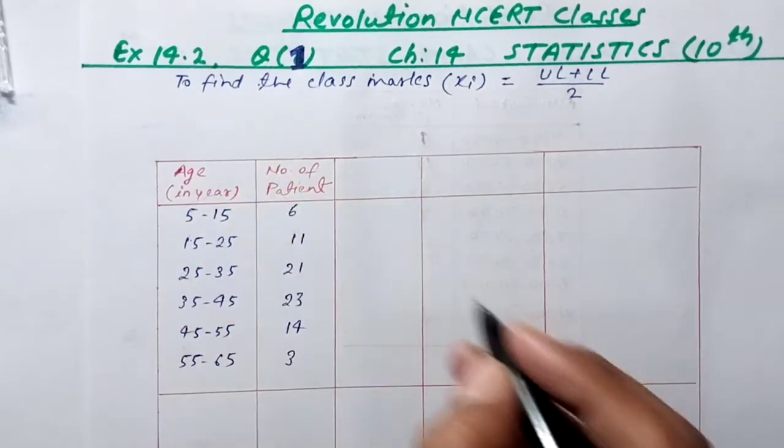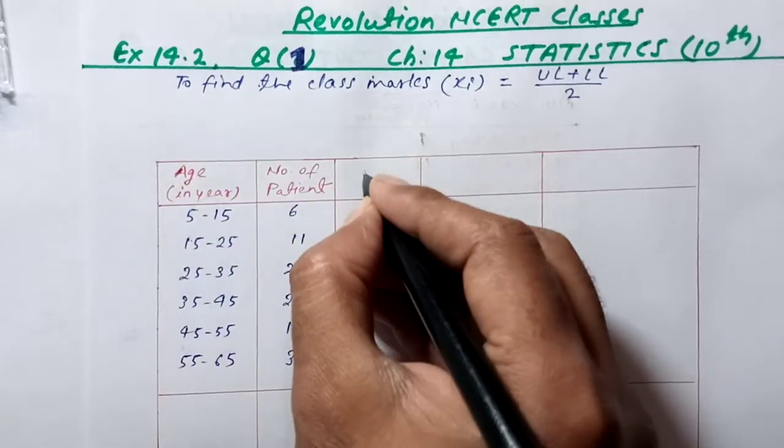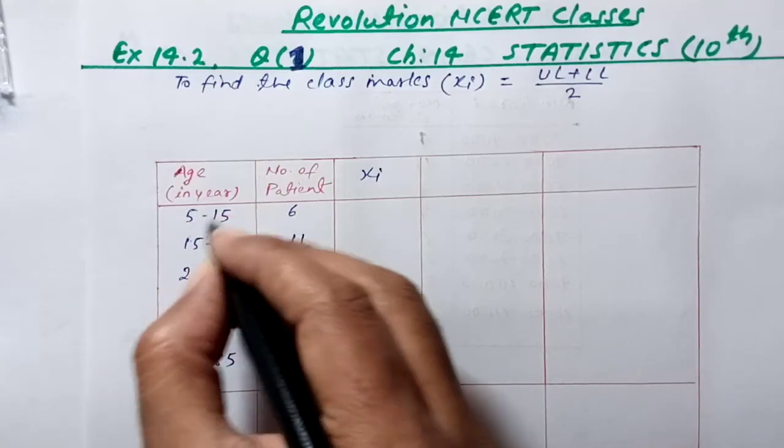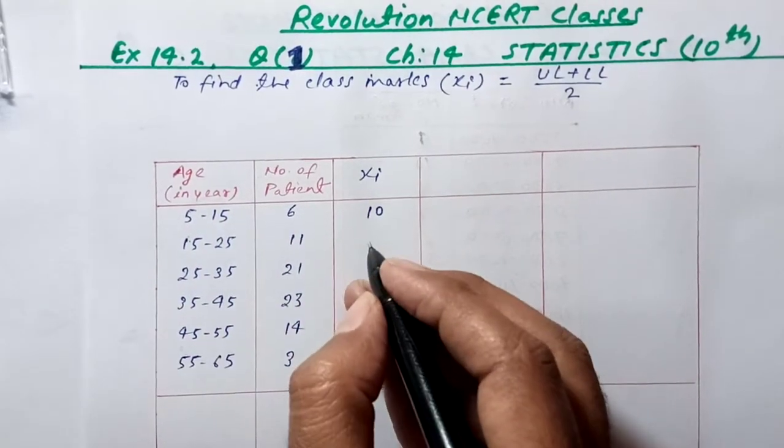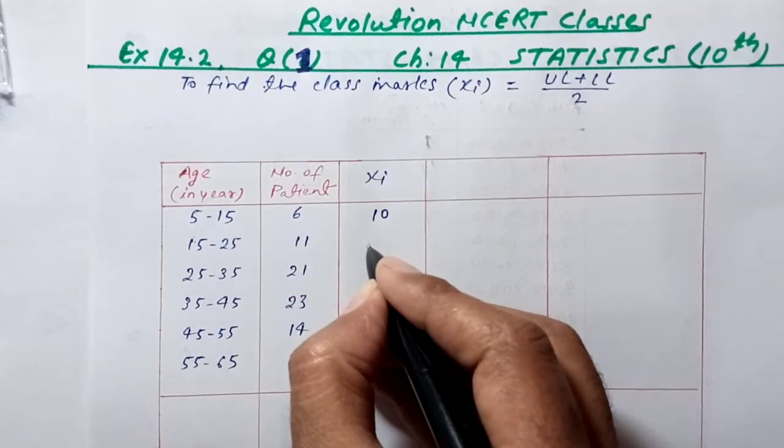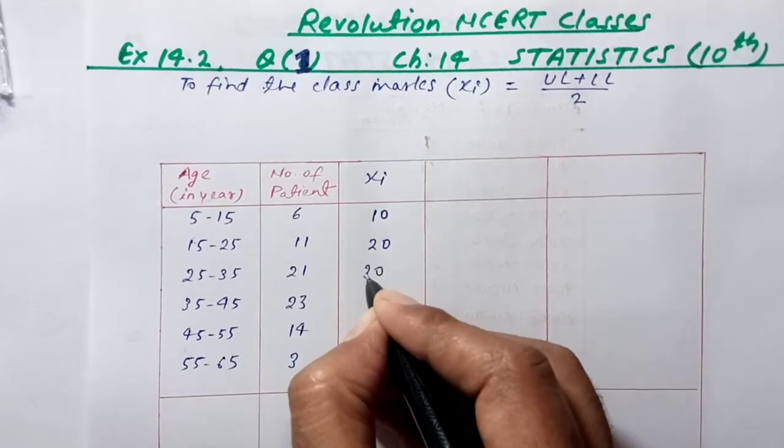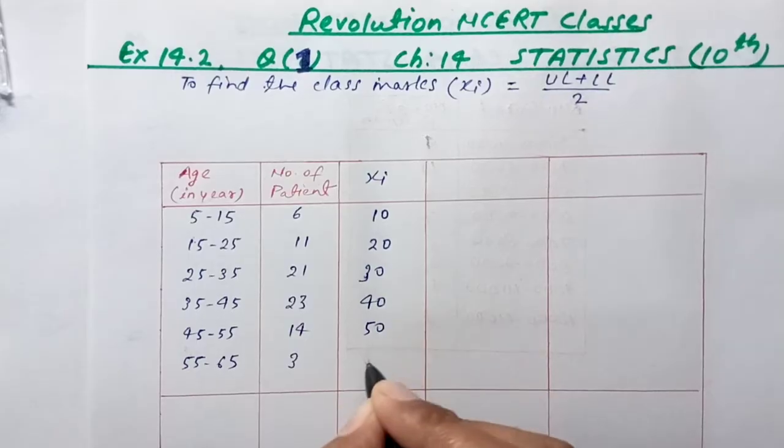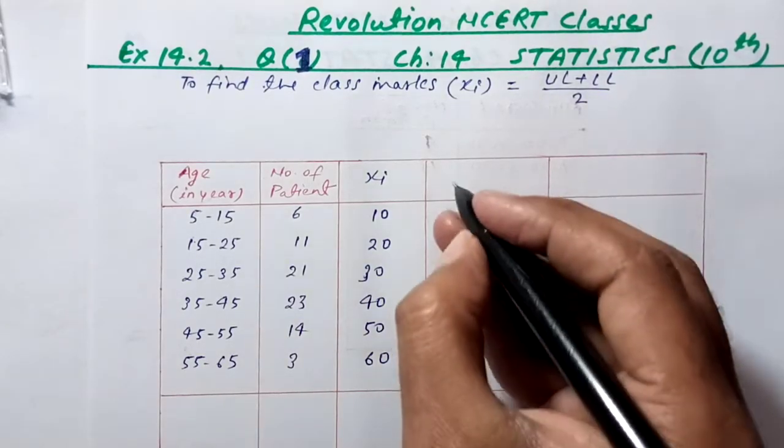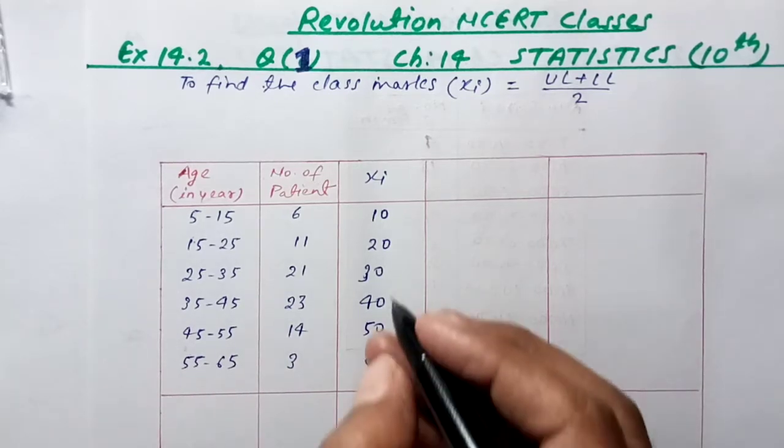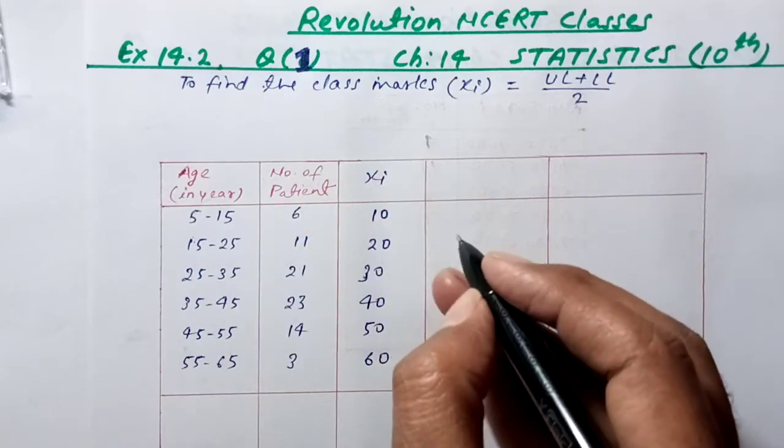The class marks are: 10, 20, 30, 40, 50, and 60. For example, 55 to 65, the average is 55 plus 5 equals 60.